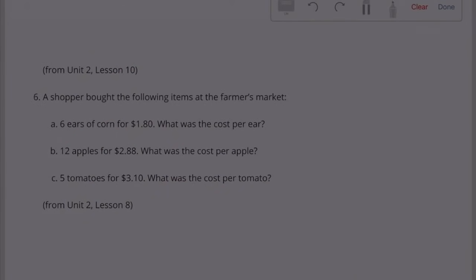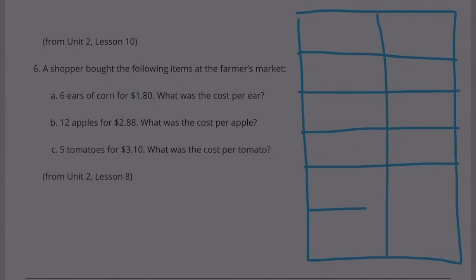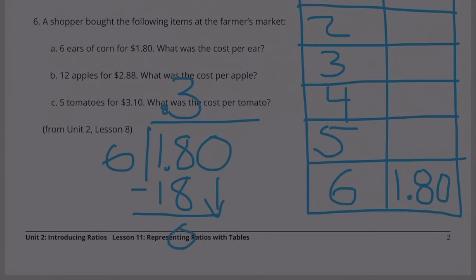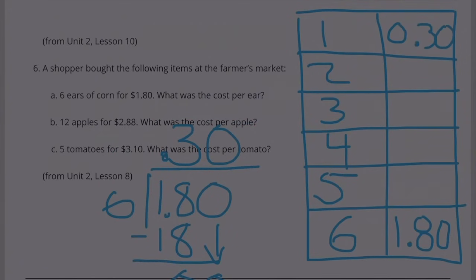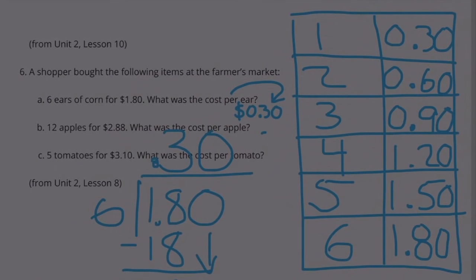Number 6. A shopper bought the following items at the farmer's market. Part A: six ears of corn for $1.80. What was the cost per ear? If six ears of corn cost $1.80, then one ear of corn costs $0.30.